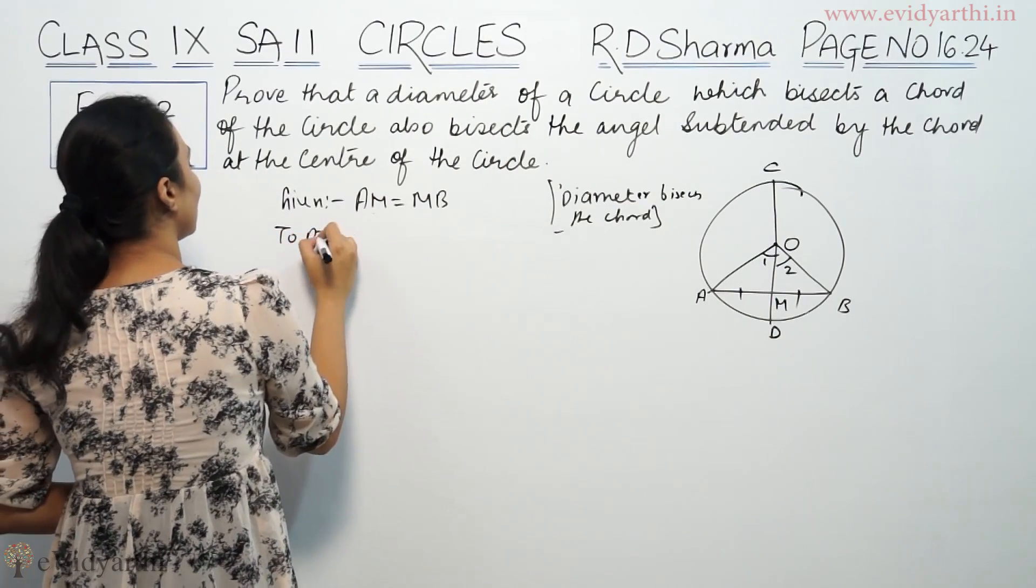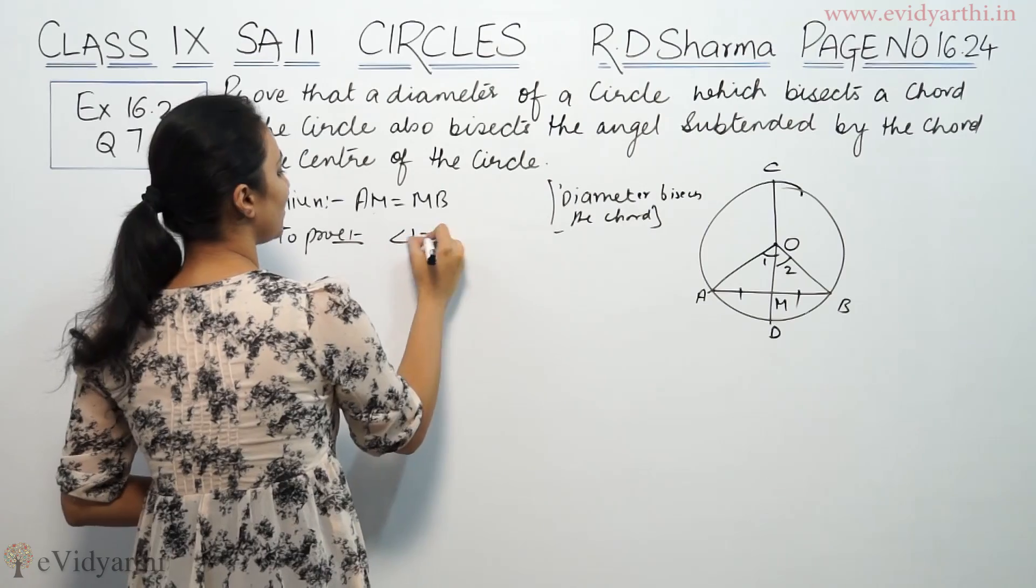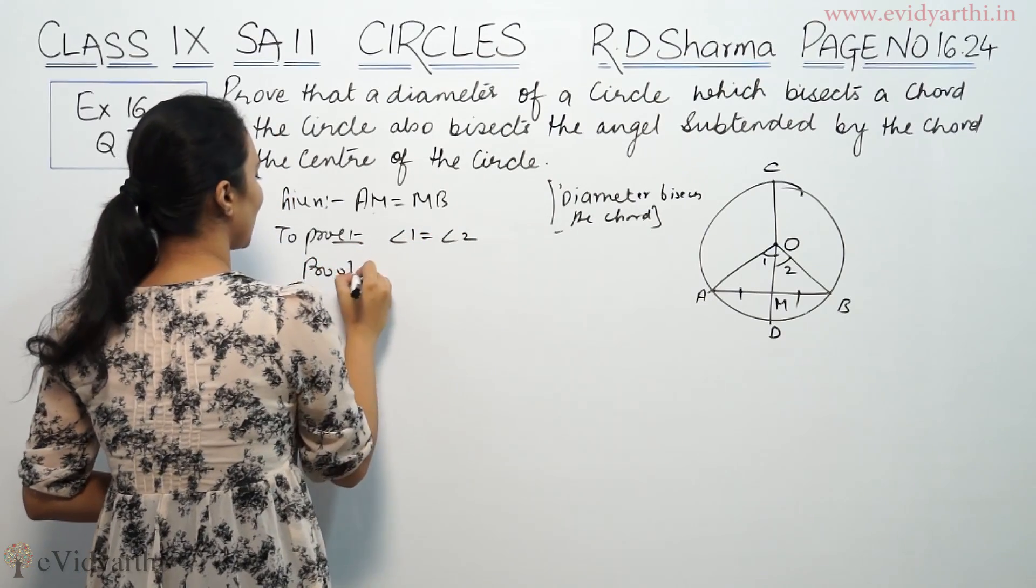And we have to prove that angle 1 is equal to angle 2. Prove. Now we will consider these two triangles.